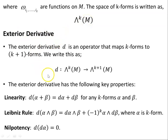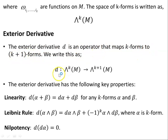The exterior derivative D is an operator that maps K forms to K plus one forms. We write this as D mapping the space of K forms on the manifold M to the space of K plus one forms on the manifold M.